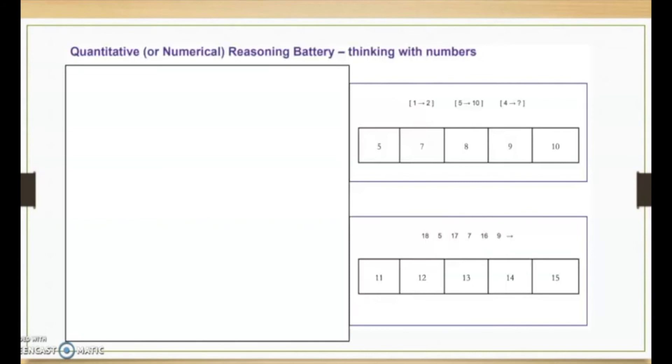Quantitative or numerical reasoning battery, thinking with numbers. So, in our first example, I'm going to challenge you here again on this one. So one going to two, and then we have five that turns into ten. And then four will turn into what if they follow the same rules. And we can see after a little bit of thinking that the numbers are doubling each time.